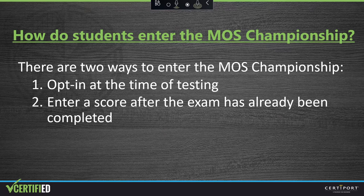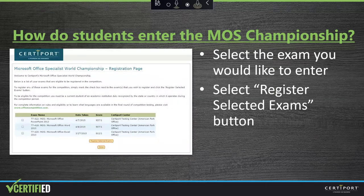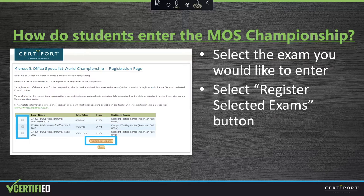If a student did not opt in to entering their exam score before starting their exam, or if they were unsure if they entered their exam into the Microsoft Office Specialist championship, then the student can manually enter their exam score. To do so, the student will need to log in to their CertiPort account by visiting certiport.com and entering their username and password. After logging in, the student should click on the Microsoft Office Specialist championship link on their homepage, check the box next to the exam they wish to enter, and then click the Register Selected Exams button.